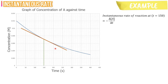Step 4: Make a triangle out of this tangent. Step 5: The difference in concentration is labeled as delta A, whereas the difference in time is labeled as delta T.